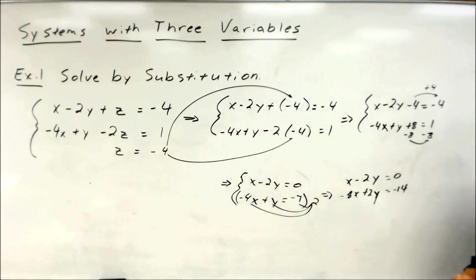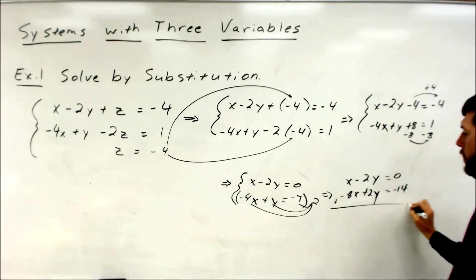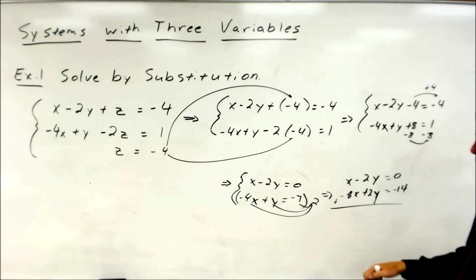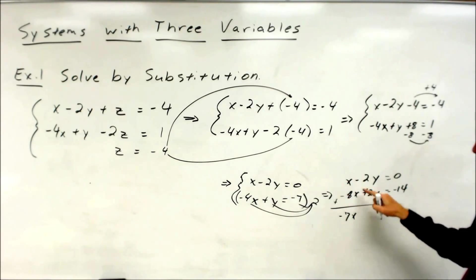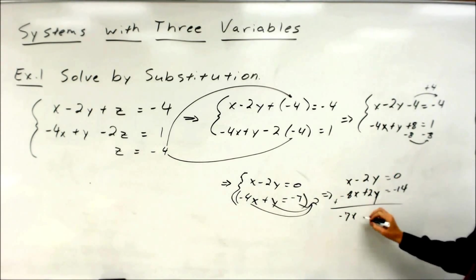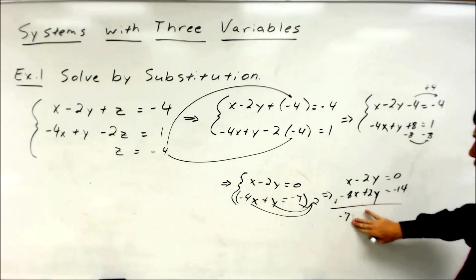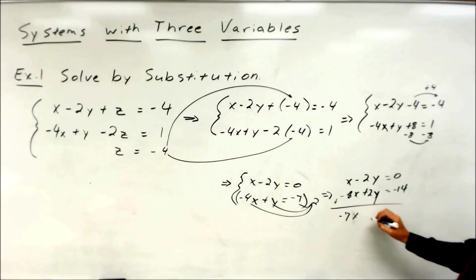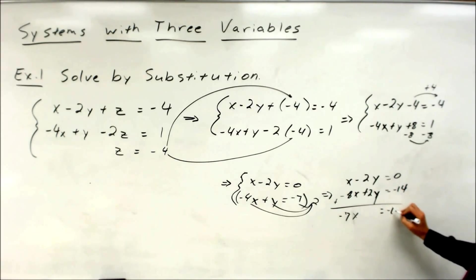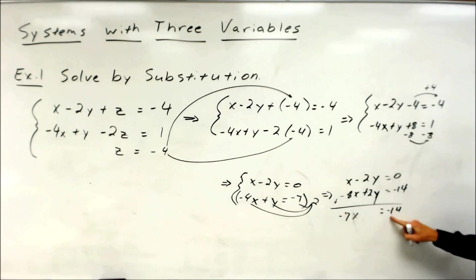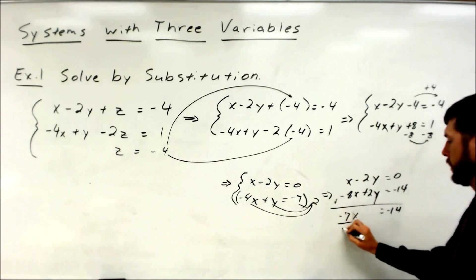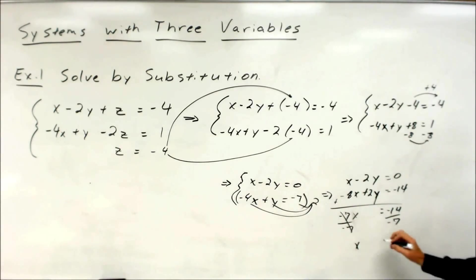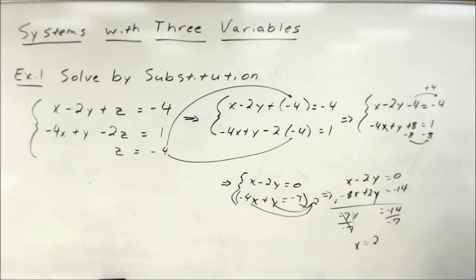Combine those two lines together. So x and negative 8x is negative 7x. Negative 2y plus 2y cancels — that's why we call it elimination sometimes. And then we get negative 14. Zero and negative 14. Finish solving: negative 7 divided into negative 14. x is equal to 2.